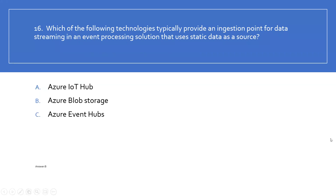Question 16: which of the following technologies typically provides an ingestion point for data streaming in an event processing solution that uses static data as a source — Azure IoT Hub, Azure Blob Storage, or Azure Event Hub? Azure Blob Storage is the right answer. Azure Blob Storage provides an ingestion point for data streaming in an event processing solution that uses static data as a source. Option B is the right answer.